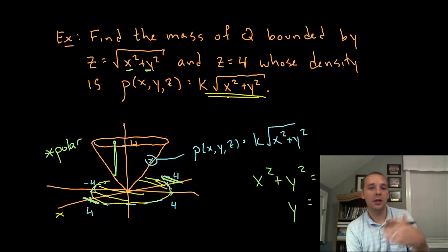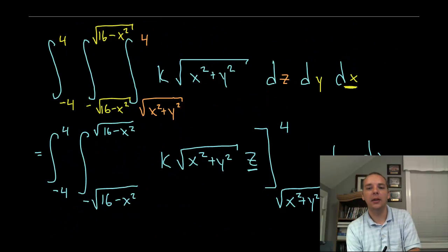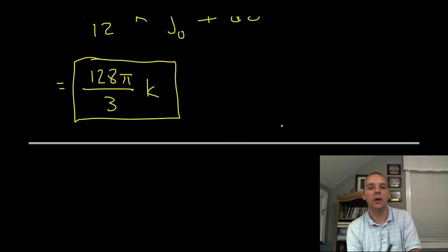So as this density function would change, that final answer would change. But once a k is decided upon for the density, if this was a real solid and we could figure out this k value, you could plug it in and get an actual numerical value for the mass of the solid.